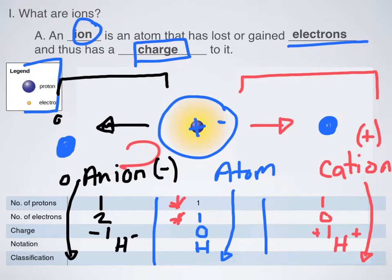How do we find the charge of something? We just count how many positive things we have — protons — and how many negative things we have — electrons — and we get our charge. So that's pretty much it for our introduction to ions. Make sure that you copy down all of the steps that we followed to make this chart.